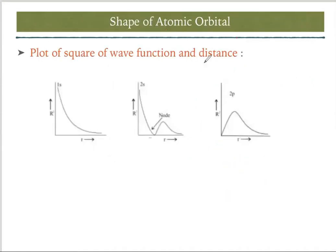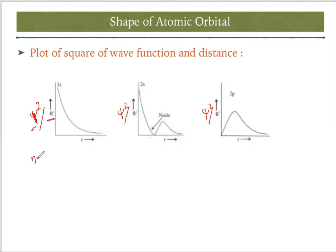Next we draw the graphs of 1s, 2s, and 2p with ψ² (or r²ψ²) on the y-axis. ψ² represents the probability of finding electron density — this is the actual graph. For 1s, nodes = n − l − 1 = 0, so the graph starts from a higher point and goes down without cutting the axis.